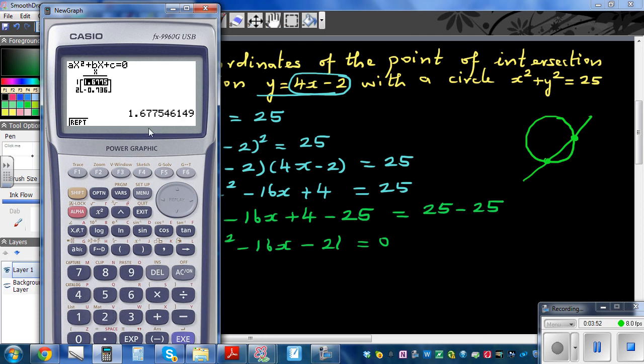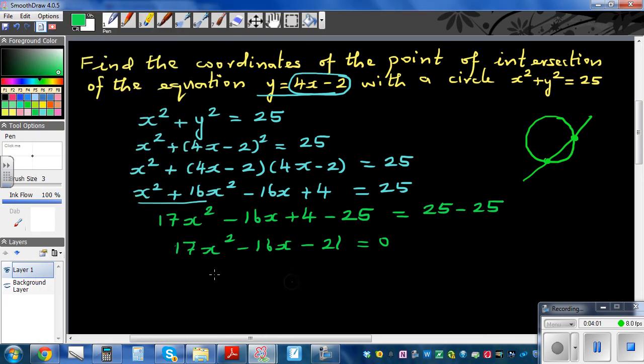So these are the x coordinates. Okay, so this is 1.68 in two decimal places. Okay, so one x coordinate, so you can say x₁ is 1.68 in 2 d.p., and x₂ is -0.74, am I right, -0.74.